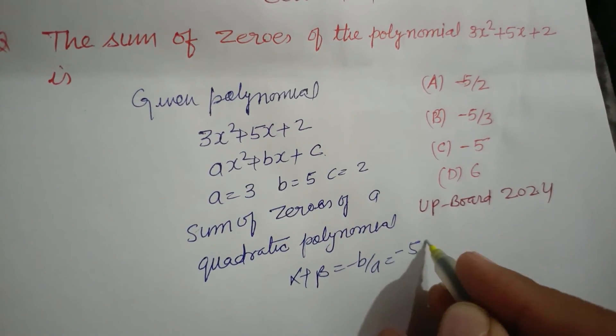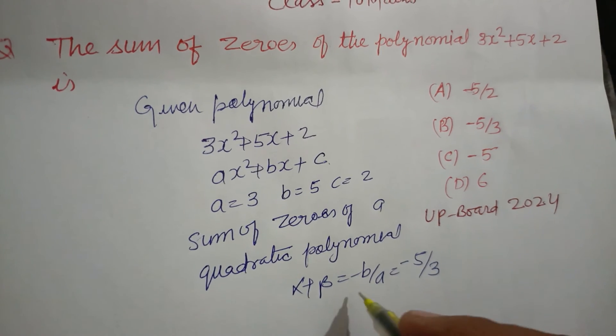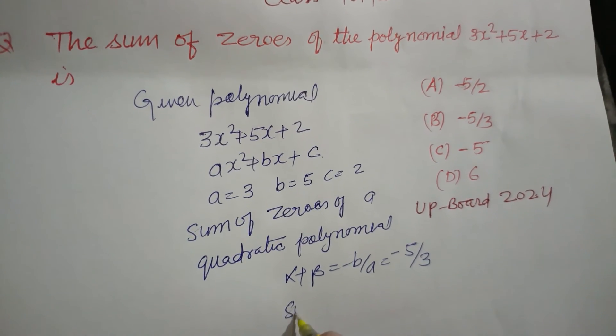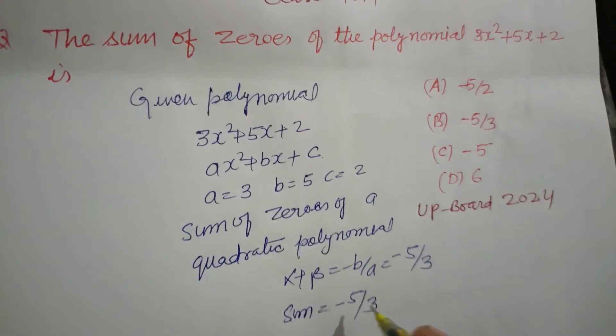Here b is minus 5 and a is 3. So sum is minus 5 upon 3.